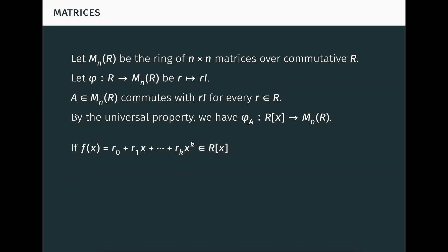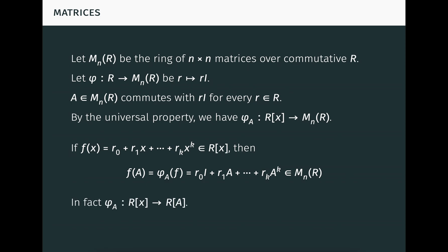If f is the polynomial seen here, then f of A, understood to be phi_A of f, is the matrix seen here. This is just the type of matrix substitution we performed earlier. The fact that phi_A is a homomorphism is very convenient, for example when substituting A into products of multiple polynomials. In fact, phi_A maps from polynomials over R into the commutative subring of the matrices over R generated by A and the identity matrix, here denoted R[A].